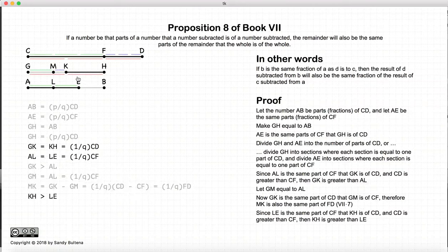We're going to do the similar thing here, where we have KH and KH is larger than LE, using the same argument as before. GK is a fraction of CD and LE is the same fraction of CF. So KH will be greater than LE because CD is greater than CF. So with that in mind, we can create a segment, KN, where KN is less than KH. And we'll let KN equal LE, which will be the same fraction of CF, the single part.